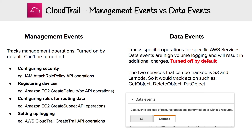Data events are turned off by default for good reason, because these events are high volume and occur very frequently. This tracks S3 events in detail, such as GetObject, DeleteObject, and PutObject. For Lambda, it would be every time the function gets invoked. So those are turned off by default.